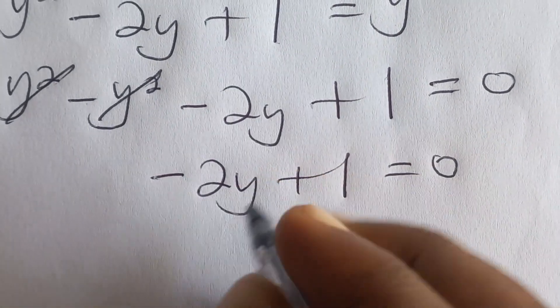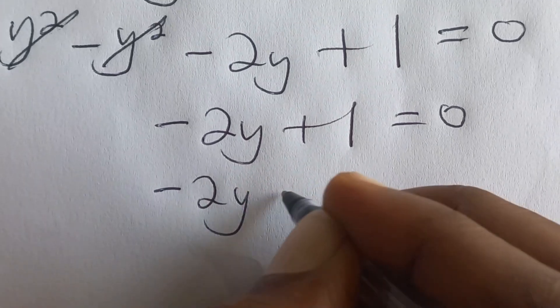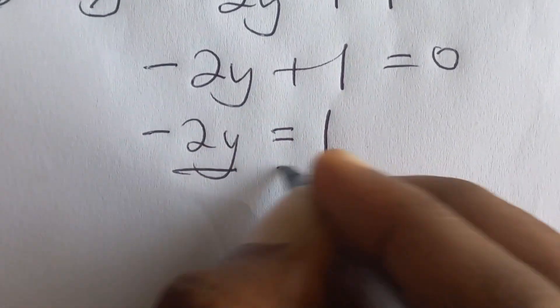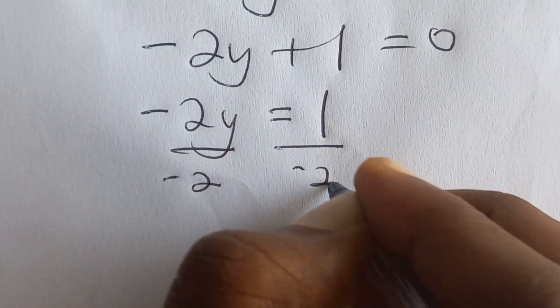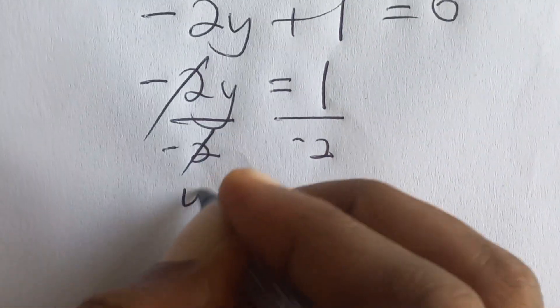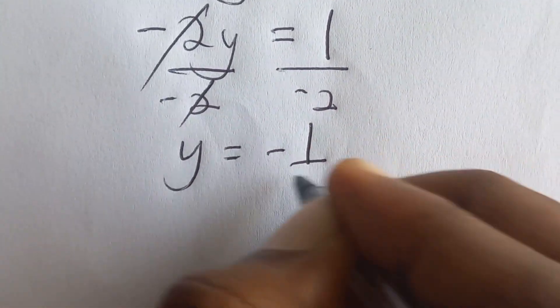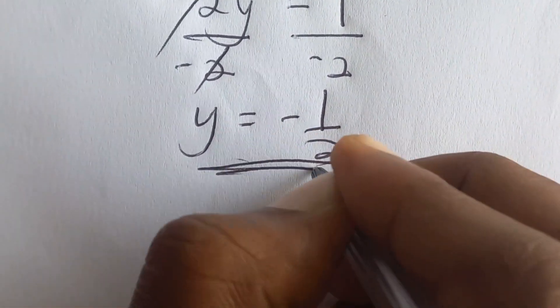So from here we say that negative 2y is equal to negative one. Then we divide by negative two, so in this one we'll cancel, leaving y is equal to negative half. So our value for y is negative half.